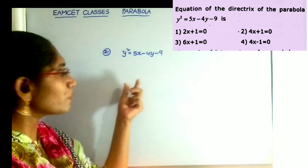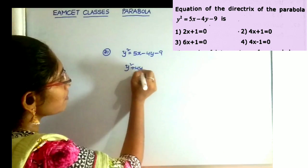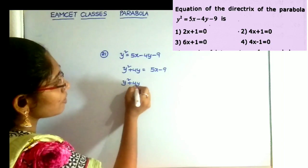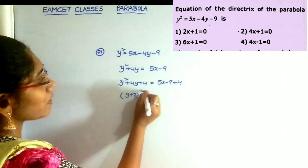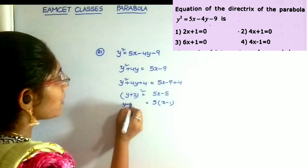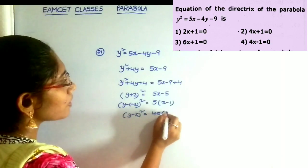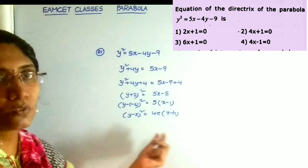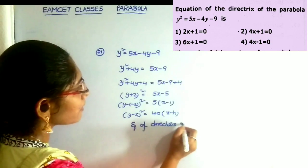The next question: what is the equation of the directrix of the parabola? We want the equation of the directrix. First, converting the given equation into the known formula. The given equation is y squared plus 4y equals 5x minus 9. Adding 4 to both sides: y squared plus 4y plus 4 equals 5x minus 9 plus 4, so y plus 2 whole squared equals 5x minus 5, and taking 5 common: 5 into x minus 1. So y minus minus 2 whole squared equals 5 into x minus 1, which is in the form y minus k whole squared equals 4a into x minus h.